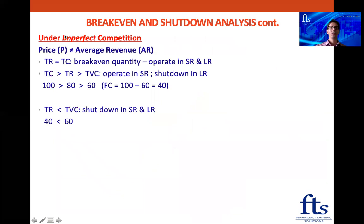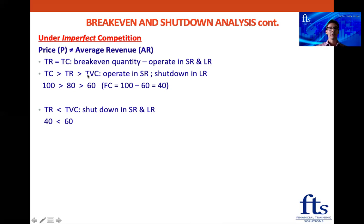Under imperfect competition, price and average revenue are not the same. If total revenue equals total costs, that's our break-even quantity, and we operate in both the short run and long run because we are making accounting profits, even though economic profits are zero.